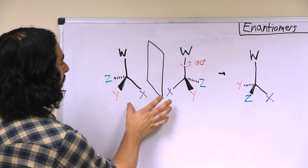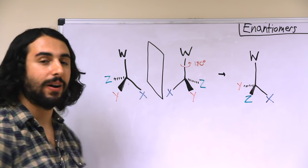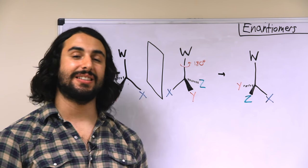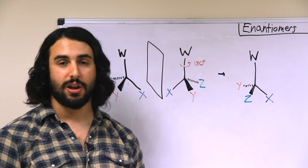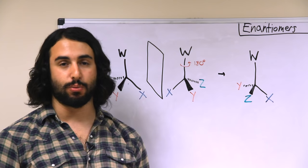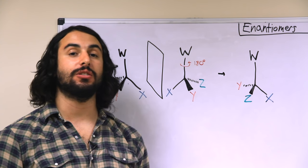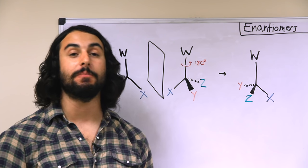Therefore, this molecule and its mirror image, which are two distinctly different molecules, are enantiomers of one another because they are non-superposable mirror images of one another.